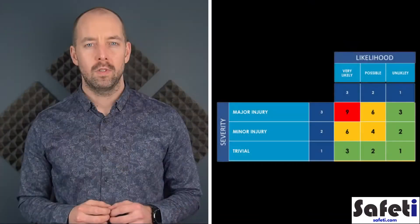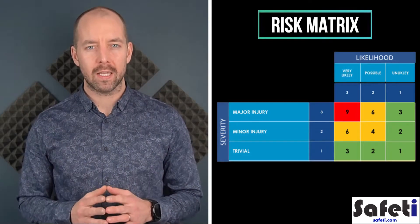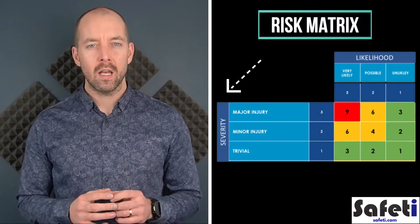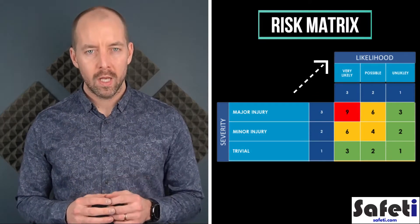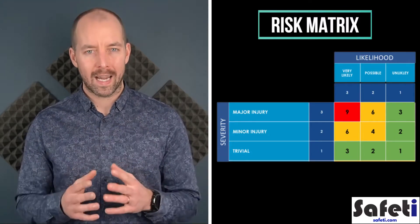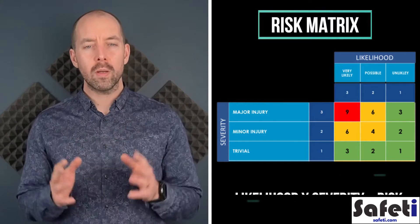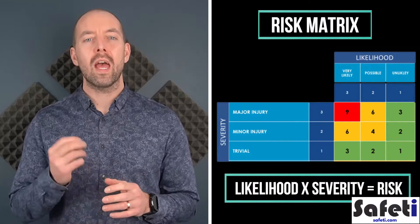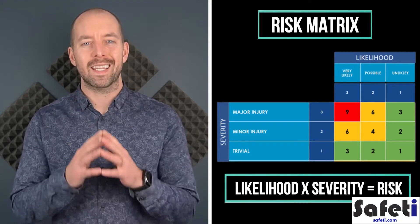Now you should see what the risk matrix looks like. On one axis you have severity and on the other axis you have likelihood. These two component parts are multiplied together to give you a risk score. Once you assign a value to each and multiply them together, you get a result representing the significance of the risk — whether high, medium, or low.